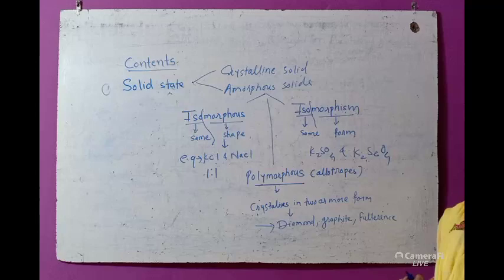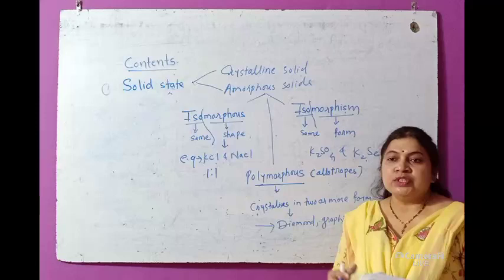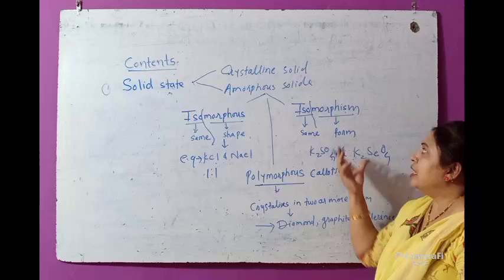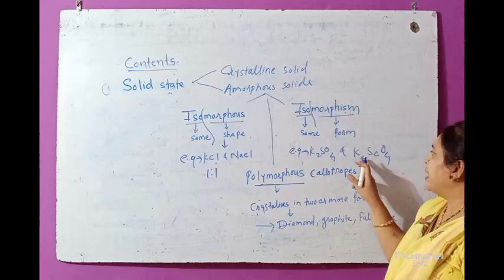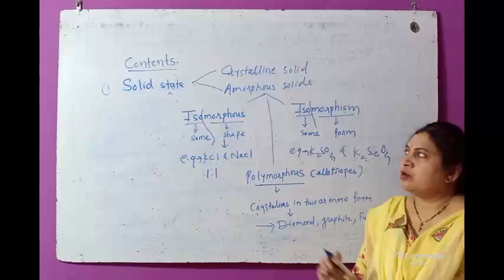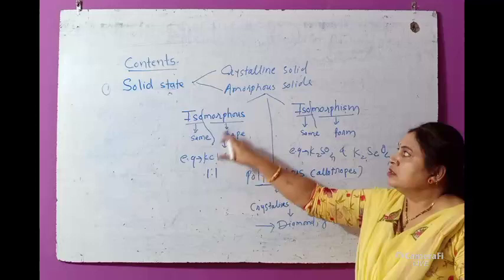In isomorphism, 'morphism' refers to form. So isomorphism is the phenomena where a crystalline substance shows the same form. That is called isomorphism. Examples are K₂SO₄ and CoSO₄. These are important properties of the amorphous solid. So isomorphous means the same shape.